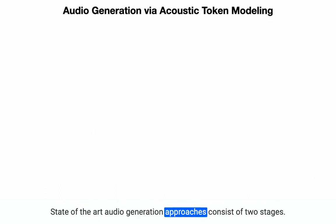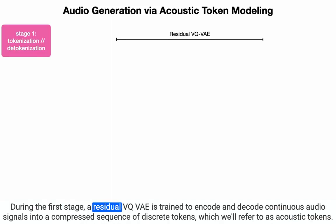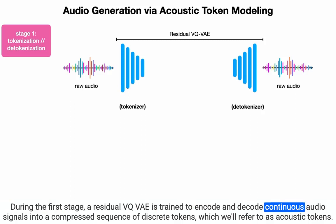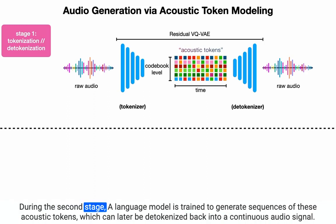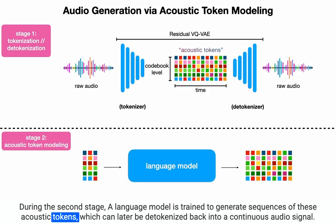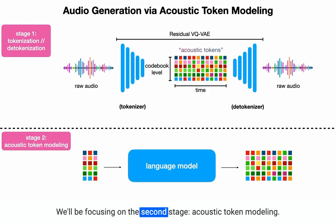State-of-the-art audio generation approaches consist of two stages. During the first stage, a residual VQVAE is trained to encode and decode continuous audio signals into a compressed sequence of discrete tokens, which we'll refer to as acoustic tokens. During the second stage, a language model is trained to generate sequences of these acoustic tokens, which can later be de-tokenized back into a continuous audio signal. We'll be focusing on the second stage: acoustic token modeling.